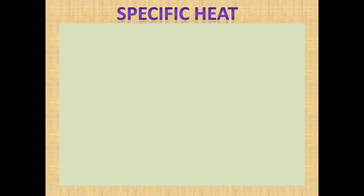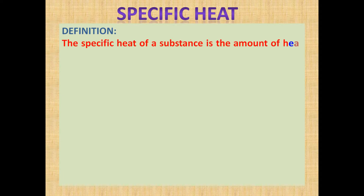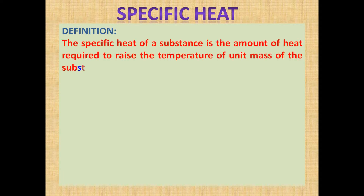Specific heat — definition. What is the definition of specific heat? You know Q = MsΔT, so S = Q / (MΔT). We derived this in the previous class. The specific heat of a substance is the amount of heat required to raise the temperature of unit mass of the substance. This is very important — you have to remember. S = Q / (MΔT).